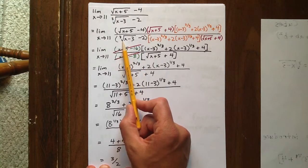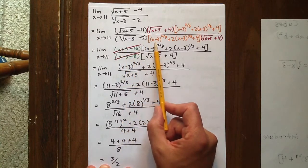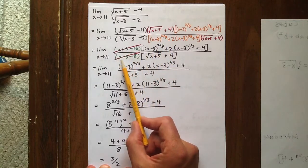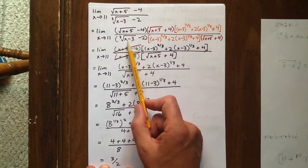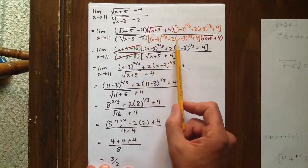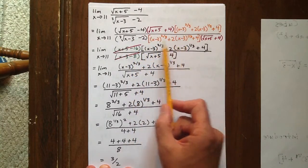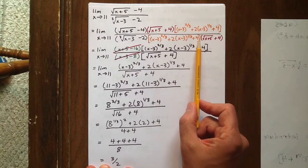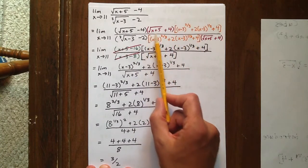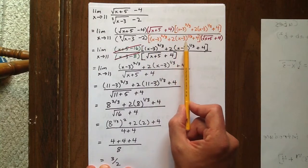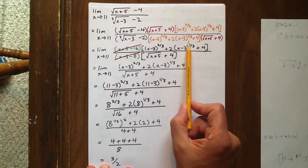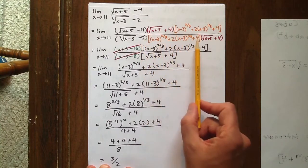In the denominator, we get the cubed root of x minus 3 times x minus 3 to the 2 thirds, which is x minus 3. Then we get plus 2 times x minus 3 to the 2 thirds, plus 4 times x minus 3 to the 1 third, minus 2 times x minus 3 to the 2 thirds, minus 4 times x minus 3 to the 1 third. Well, they all cancelled out, and minus 8.